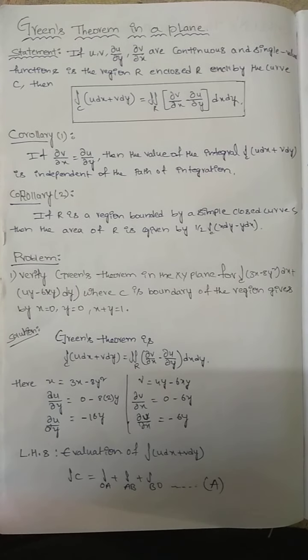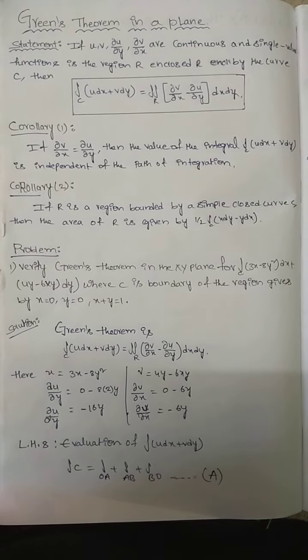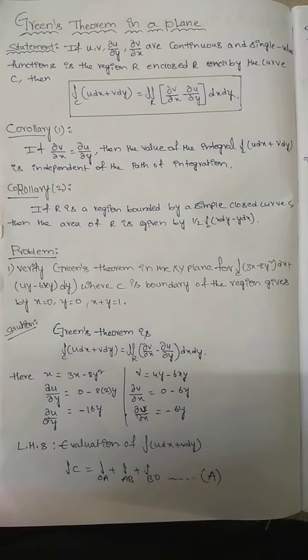By solving the problem, Green's theorem is: integral C (u dx + v dy) = double integral R (∂v/∂x − ∂u/∂y) dx dy.